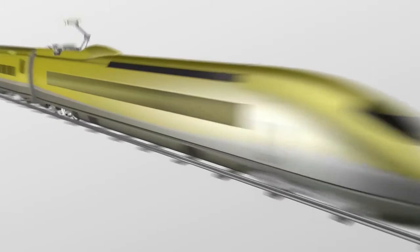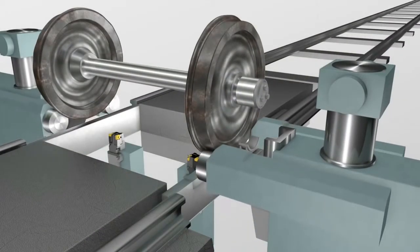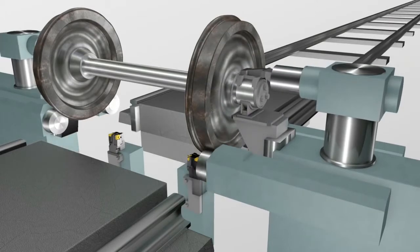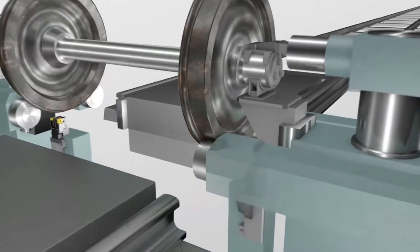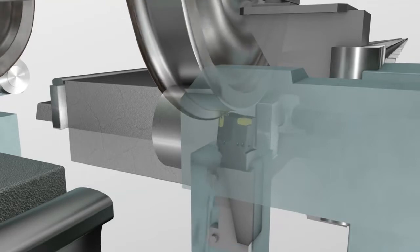After a period on the tracks, wheels need re-turning. The train rolls into the machine shop, where every flat spot, flange deformation and crack is removed, until the wheels are reset to their former standard, ready for another cycle.